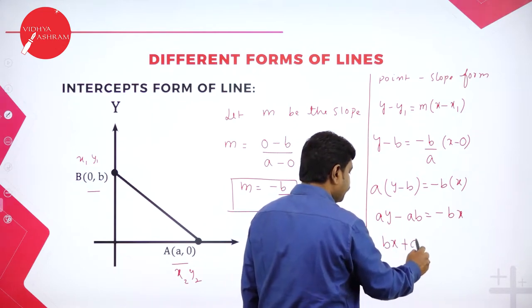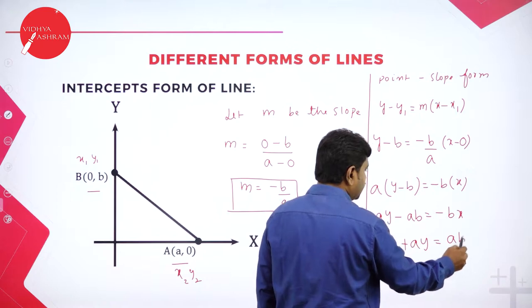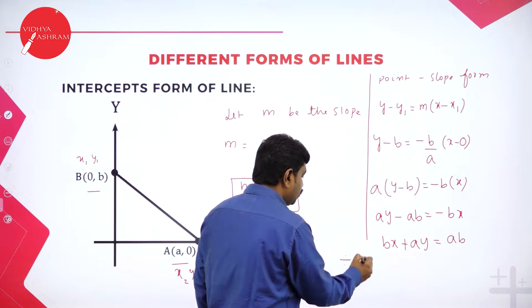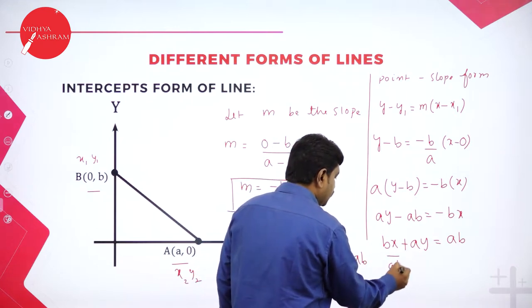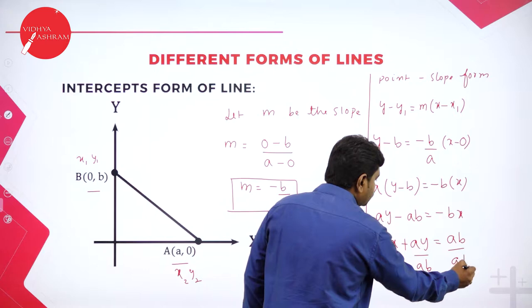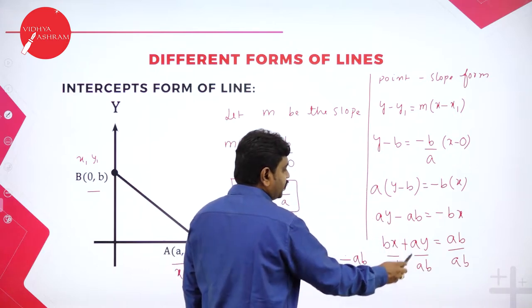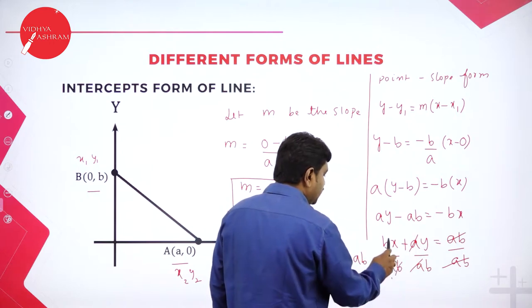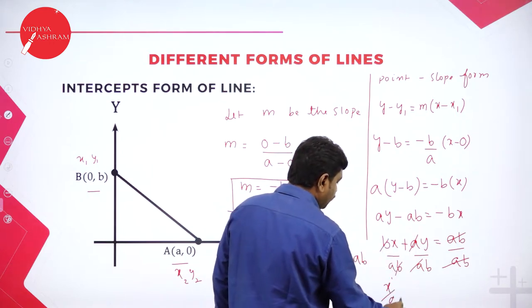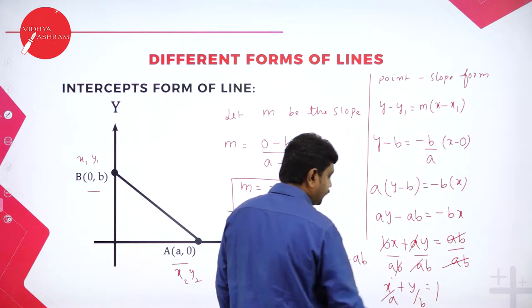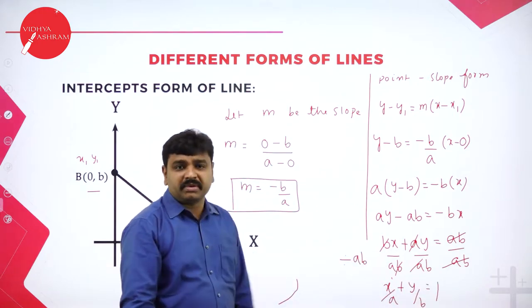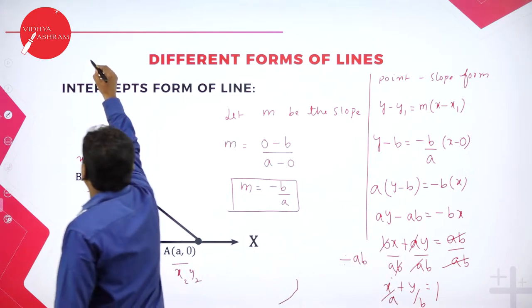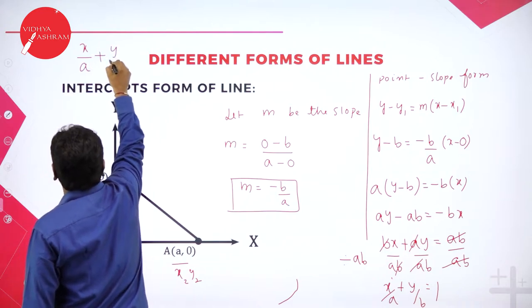Rearranging further: bring minus bx to the left side, so bx plus ay equals ab. Now divide both sides by ab. Here b cancels with ab on the left giving x by a, and a cancels giving y by b, and the right-hand side becomes 1. So we get x by a plus y by b equal to 1.